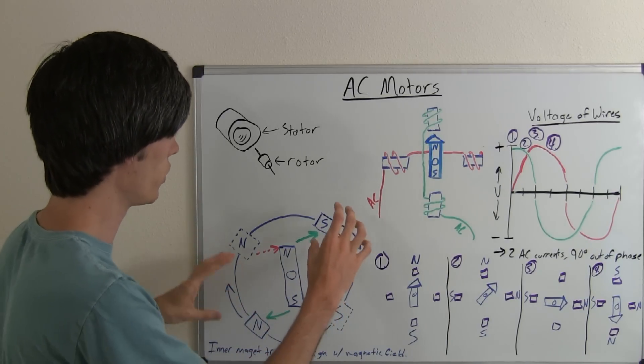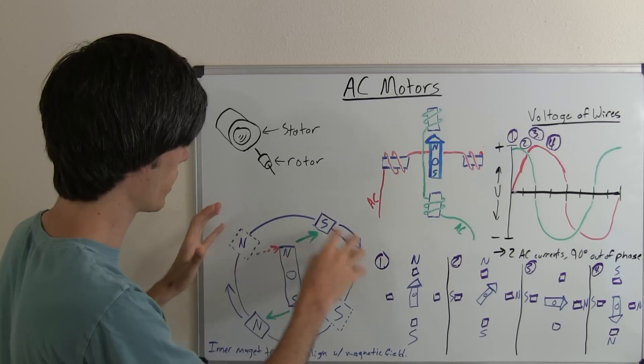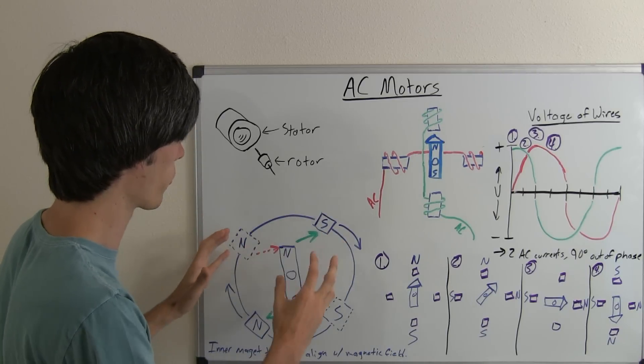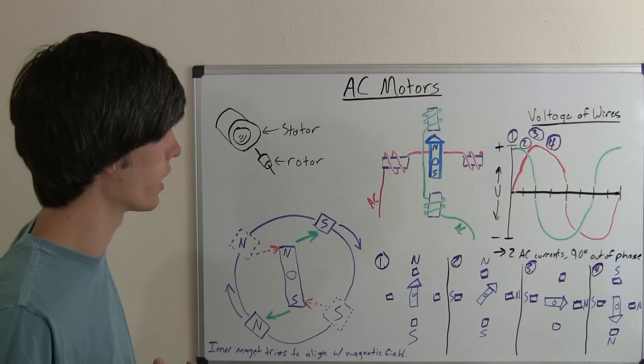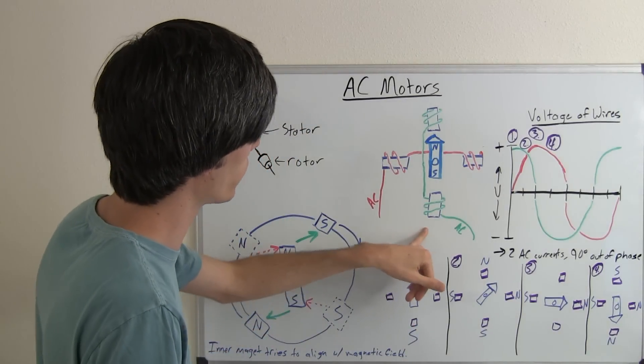The only difference is you're going to generate kind of a rotating magnetic field without actually rotating any components. And you do that with an alternating current. So let's explain it in a little bit more detail.